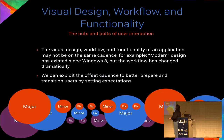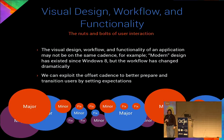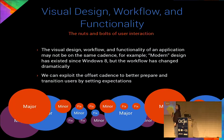For example, the modern design introduced in Windows 8 exists into Windows 10, but they have completely different workflows — one uses the start menu, the other uses the tile menu. We can exploit the offset of these cadences to better prepare and transition our users by setting expectations. If we do a large visual overhaul, users will expect the application to function differently. So if we want to start introducing workflow changes, we can begin with minor visual changes so users build that expectation themselves.